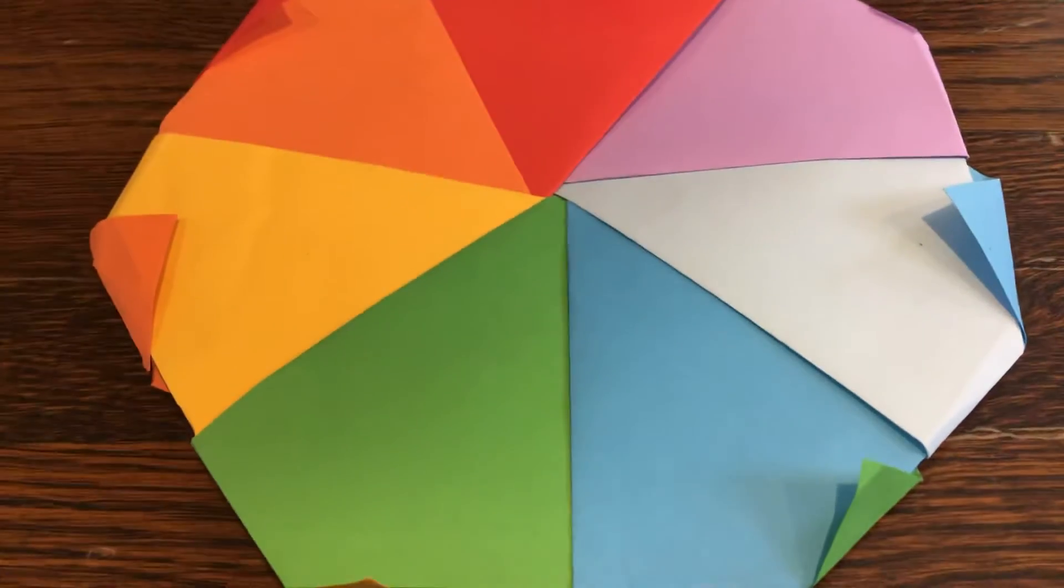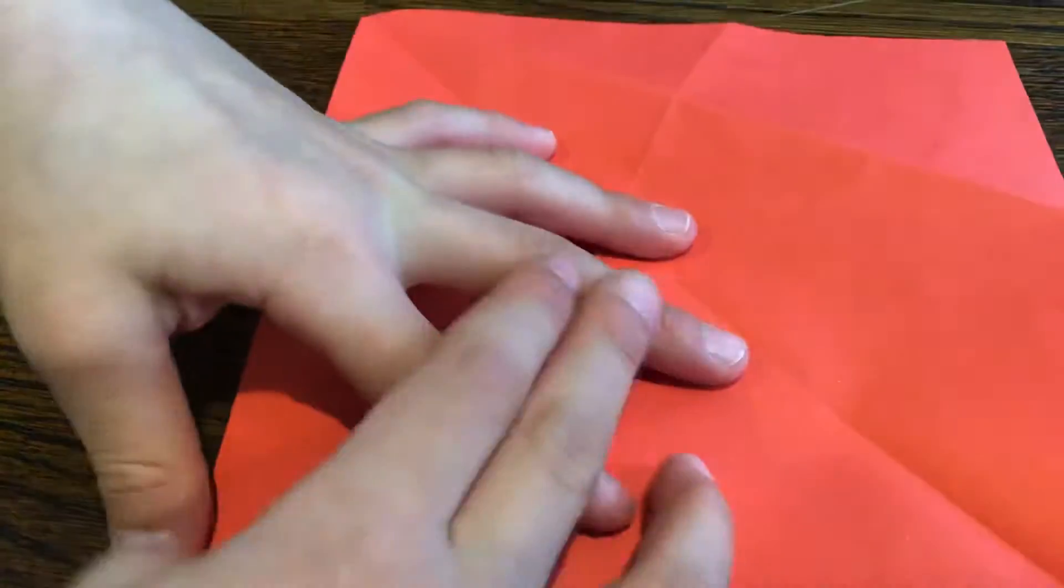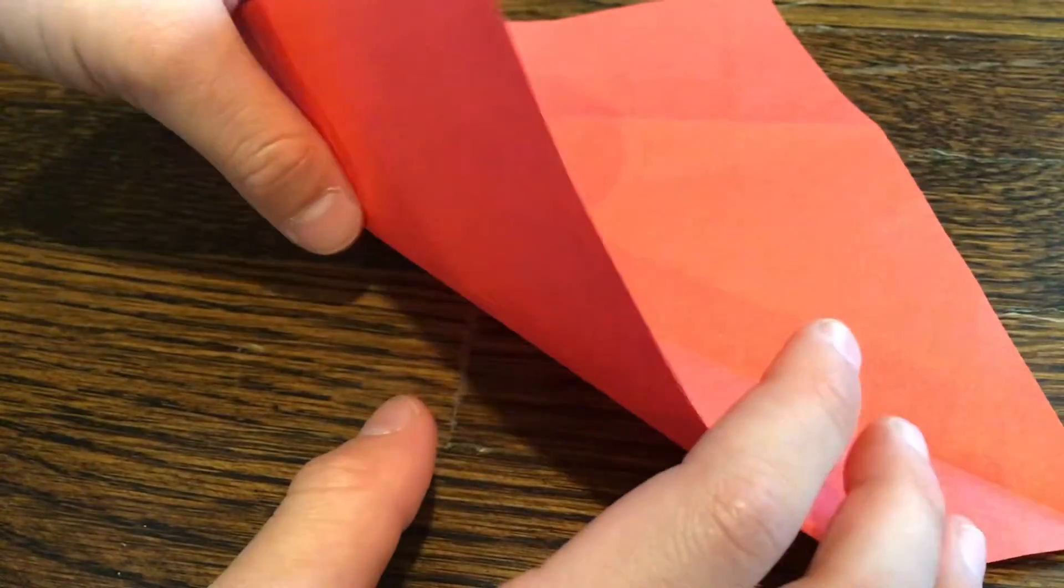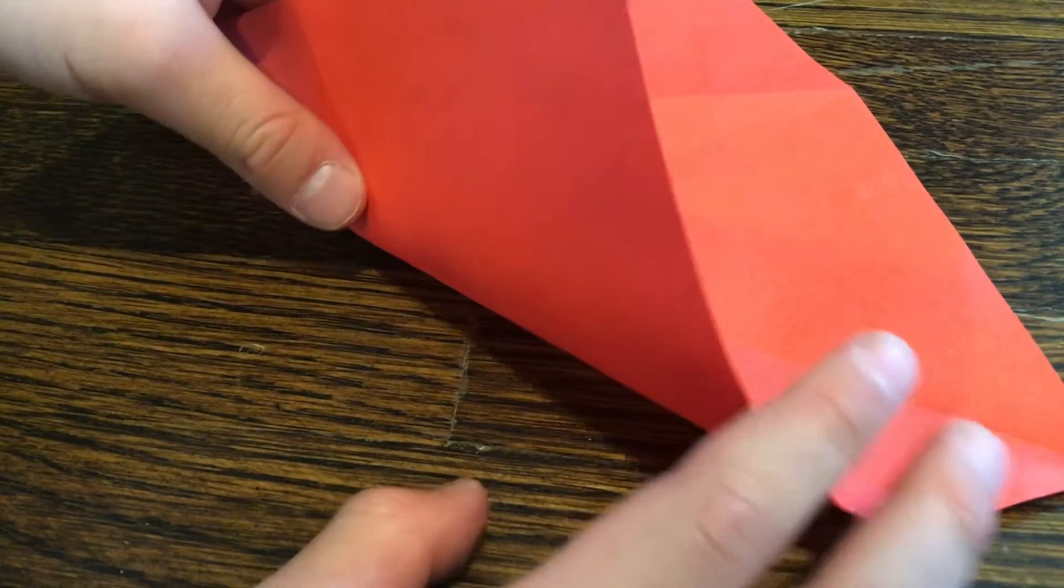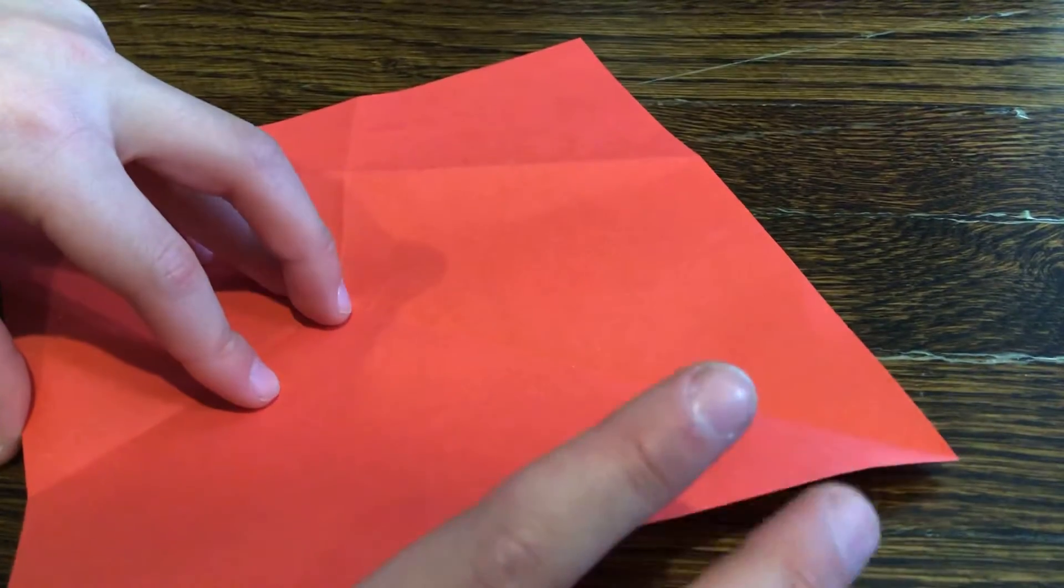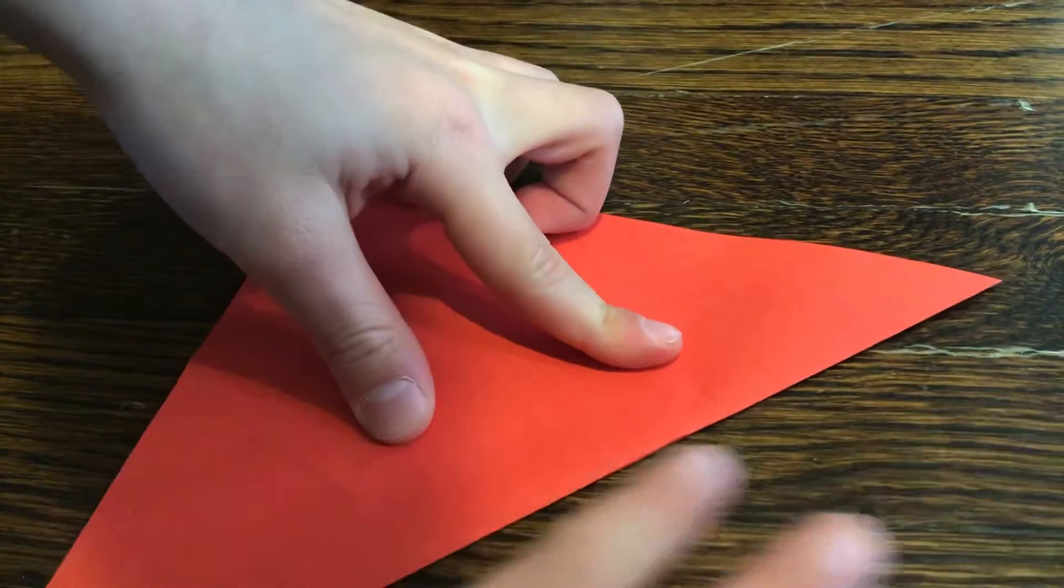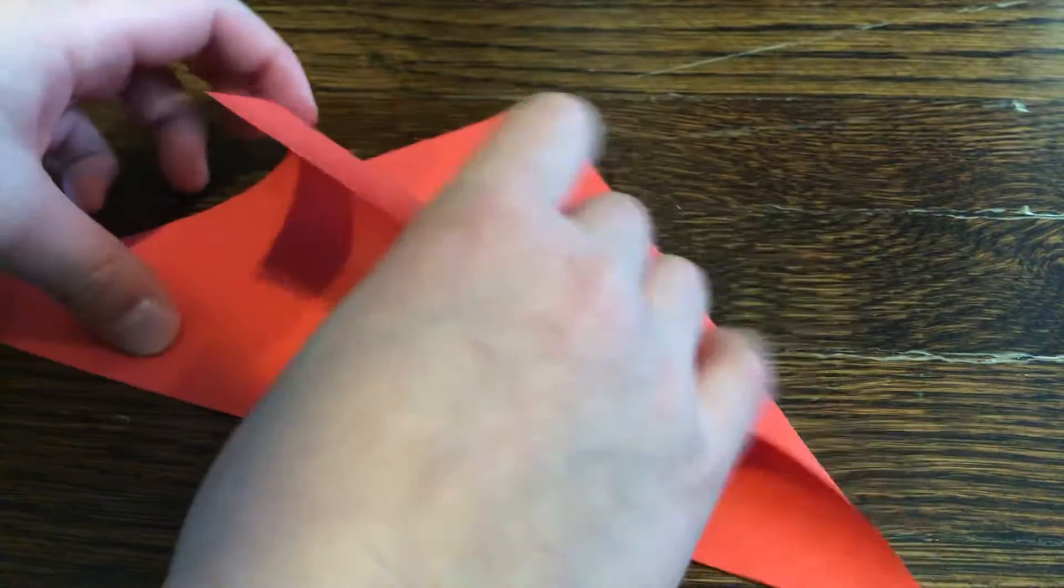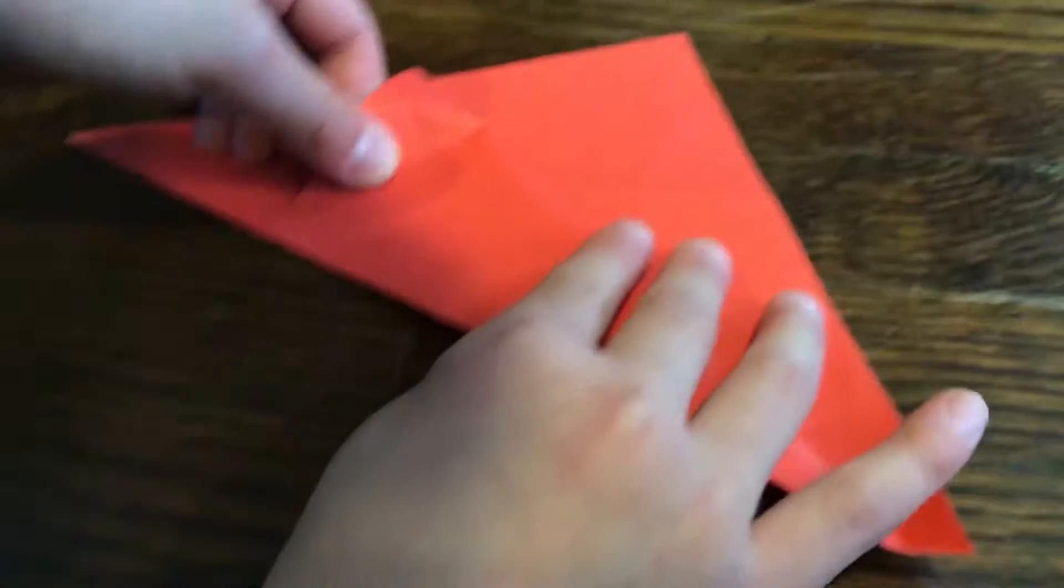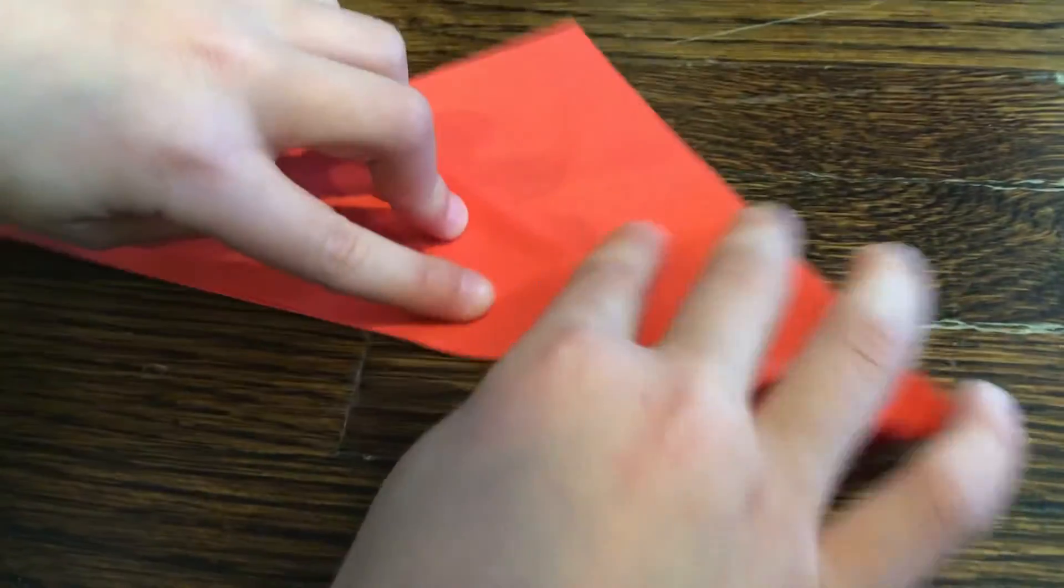use rainbow colors for this first one so you don't get confused. First grab a piece of origami paper and fold it in half. Yes, I recommend you to do the red one if you're doing rainbow colors. So fold it in half diagonally and fold this down to here, only one flap.